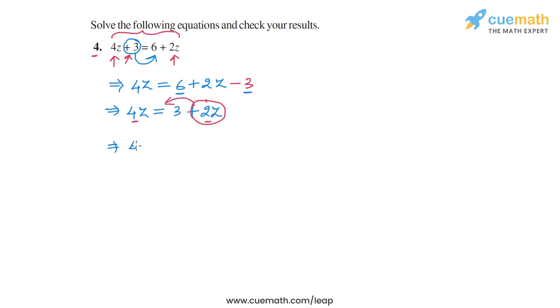So we will get 4z. And then the plus 2z term when transposed to the left hand side will become minus 2z. And this will be equal to just 3 on the right hand side.